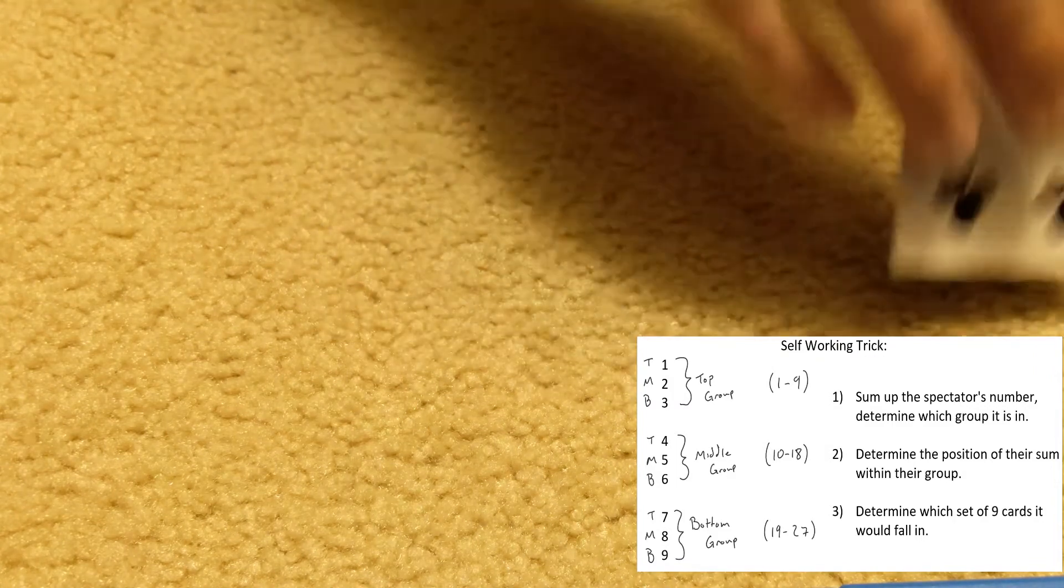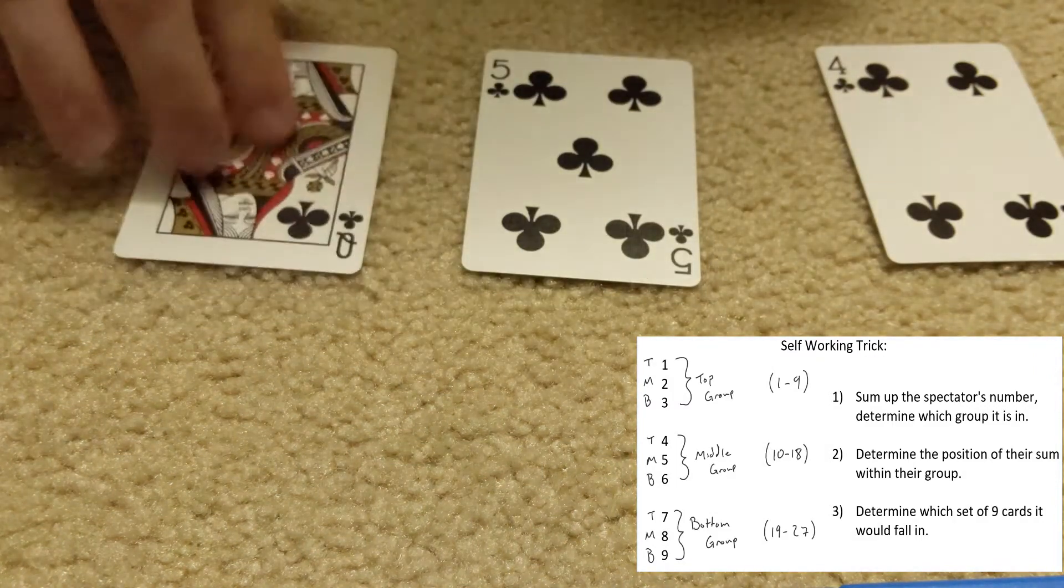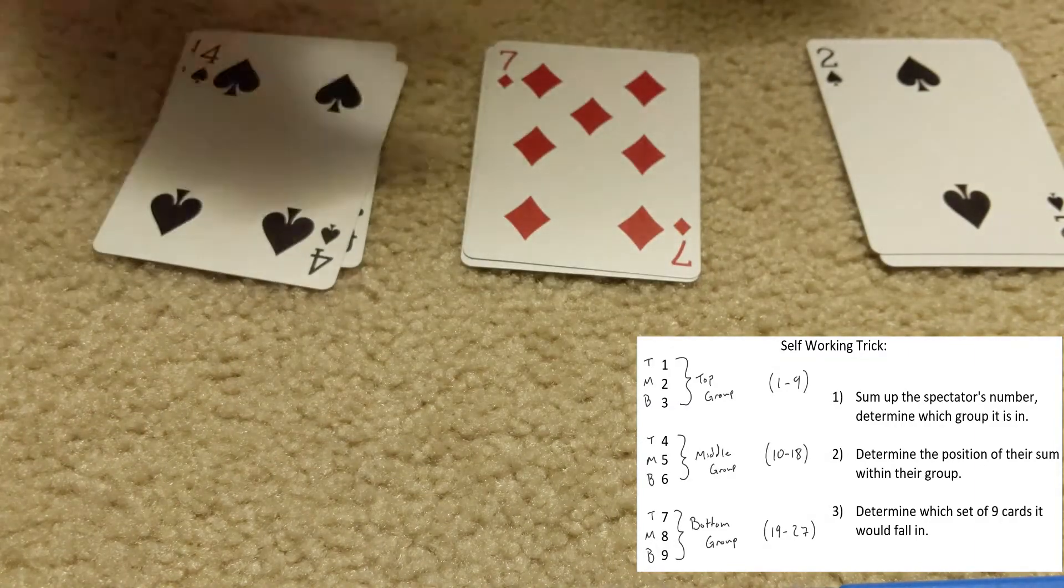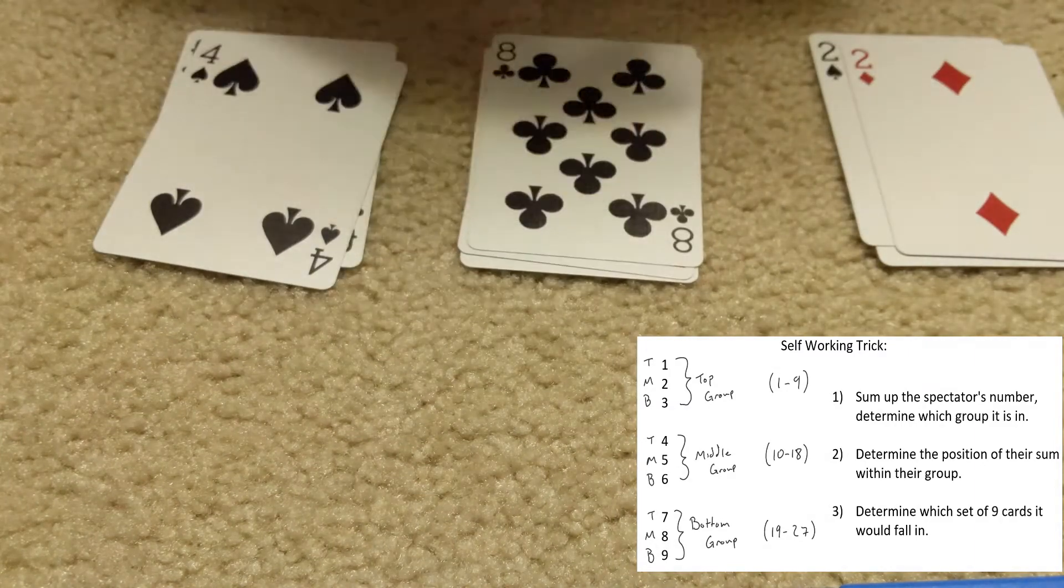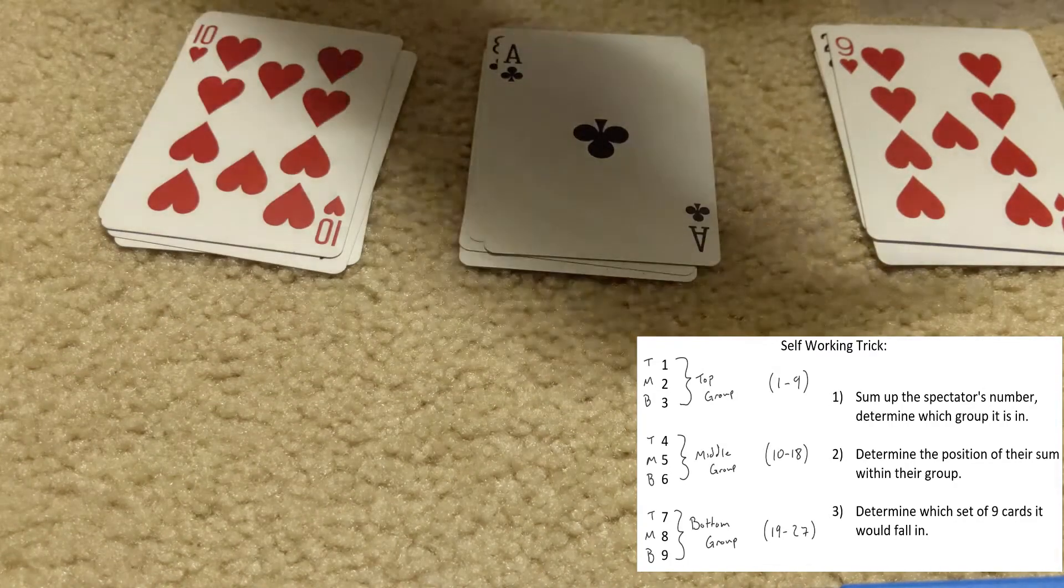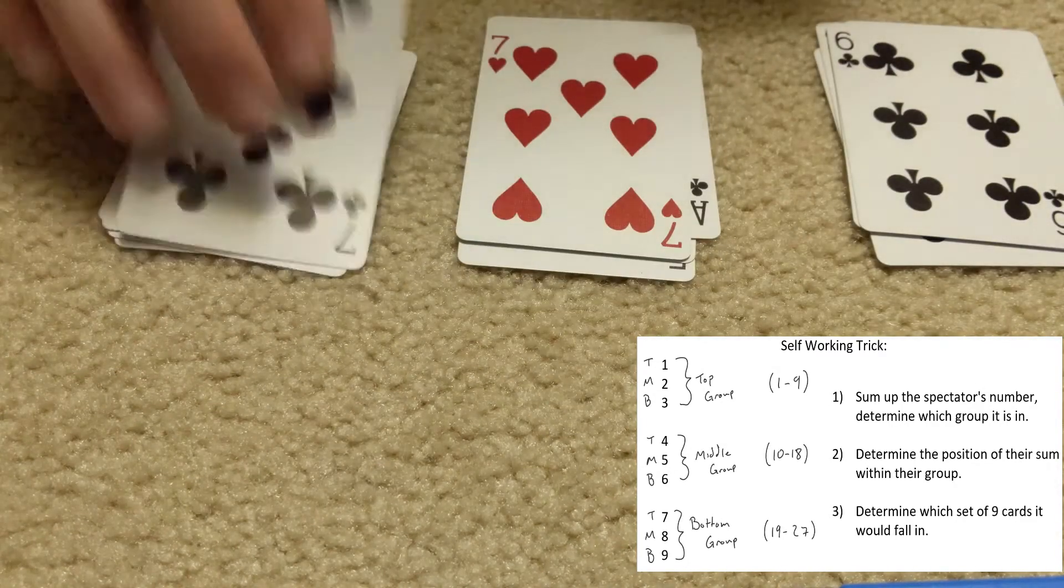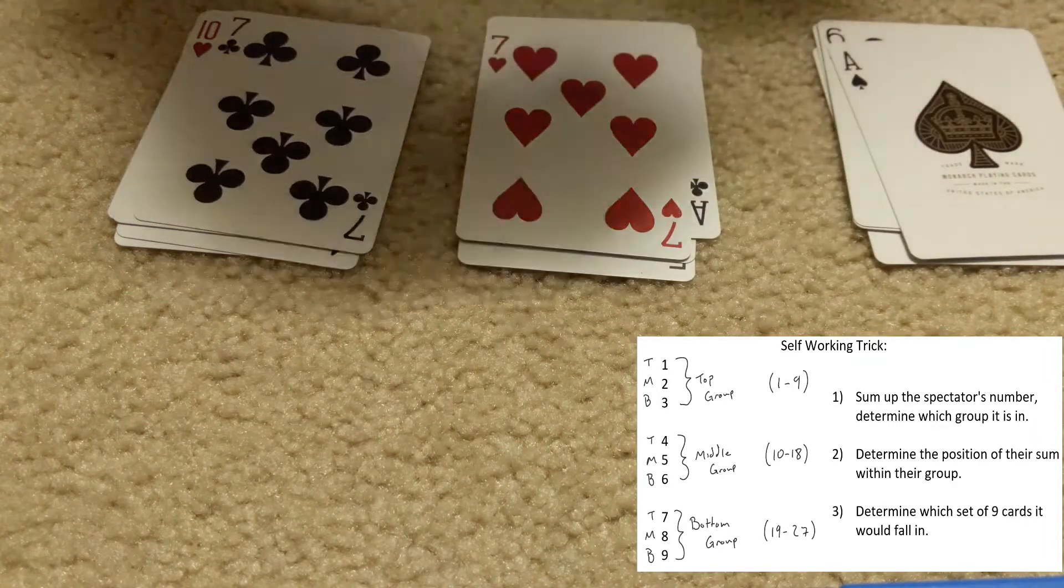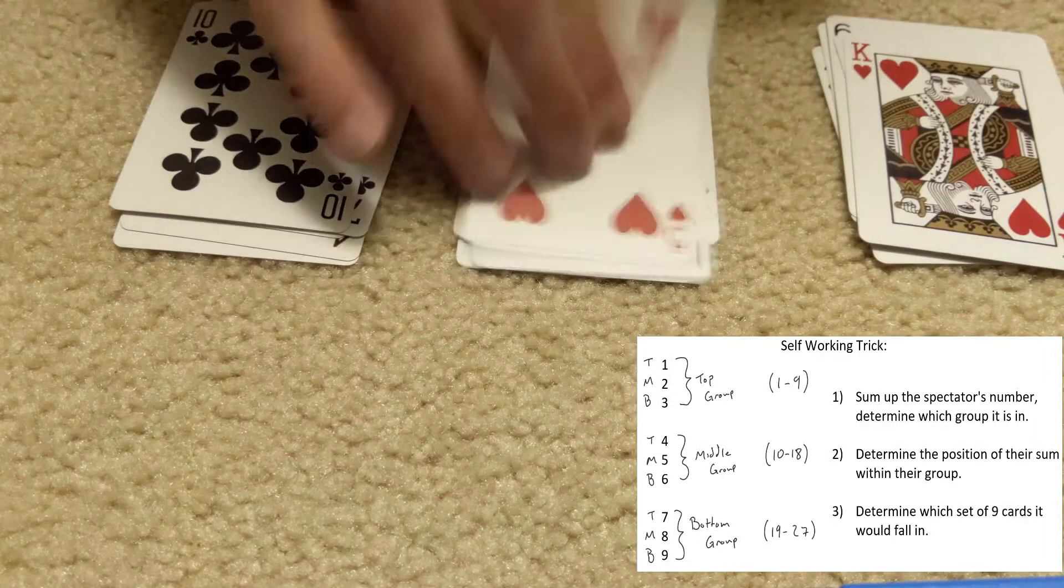And now the last time through, you go through and you determine that the spectator's number, 11, would fall in the second set of 9 between 1 and 27. So 1 through 9, 10 through 18, and 19 through 27.